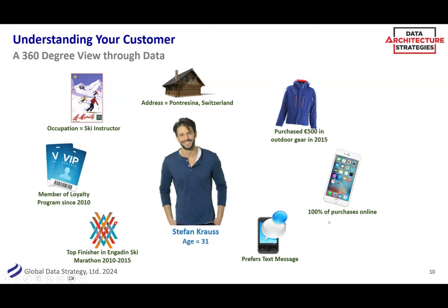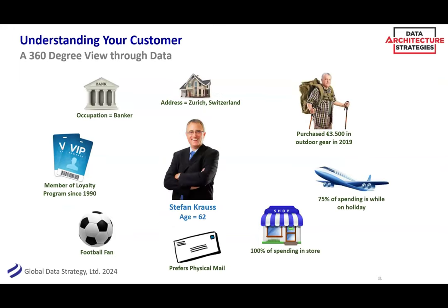Let's talk about customer and some of the benefits, risks, and components of understanding master data management. Here's Stefan Krauss — 31 years old, lives in Pontresina, Switzerland, near St. Moritz, a ski instructor who finished the Engadin cross-country ski marathon as a top finisher. He buys everything online and loves to get a deal through a text message. But how much he actually purchased was about 500 euro back in 2015 — probably good for your magazine cover, but maybe not your best customer. He actually gets all his gear free because he's a skiing instructor. Then we have another Stefan Krauss in Zurich — also named Stefan Krauss, 62, a banker whose sport is watching European football. He wants physical mail, likes to go to the store, and once a year spends $3,500 on gear. So he's probably your better targeted customer.